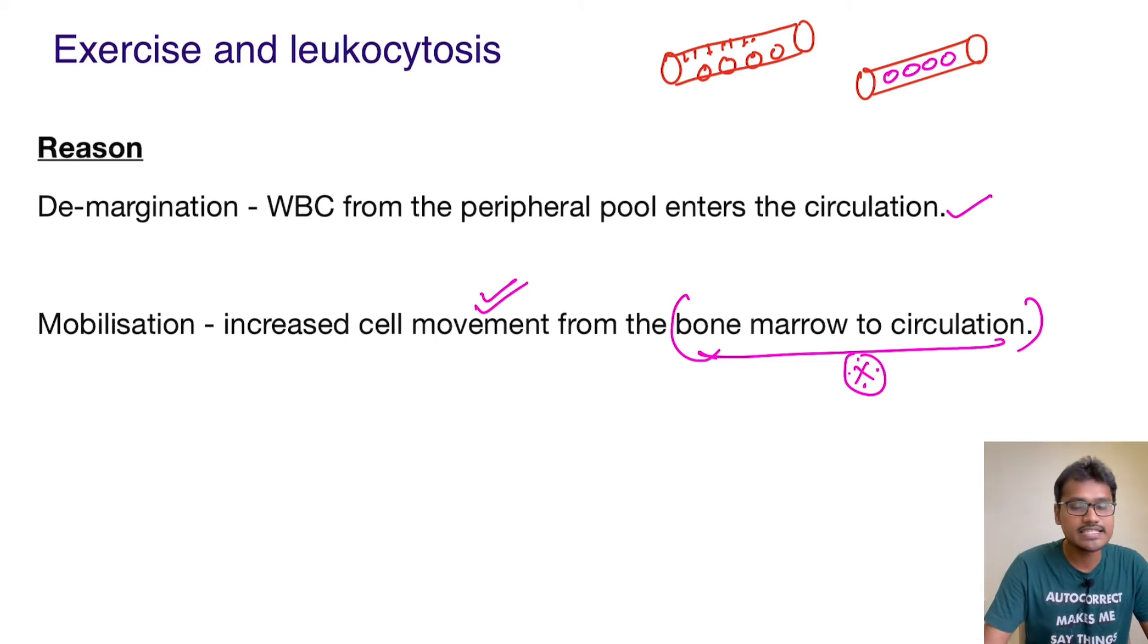So both of these mechanisms are helping the person to have leukocytosis in the post-exercise period. Both demargination and mobilization are the reasons for the increased WBC count in the post-exercise period.